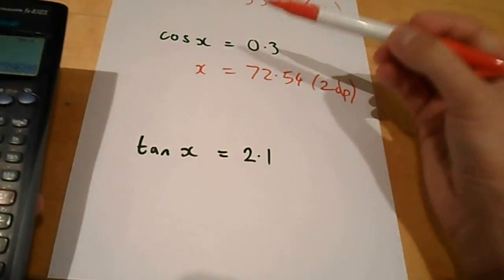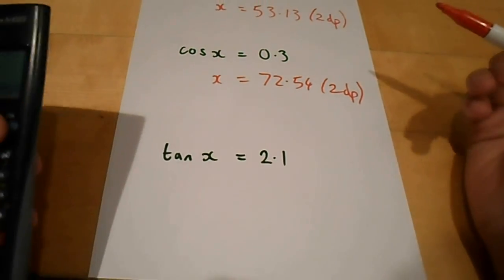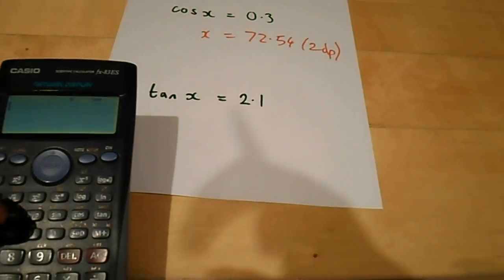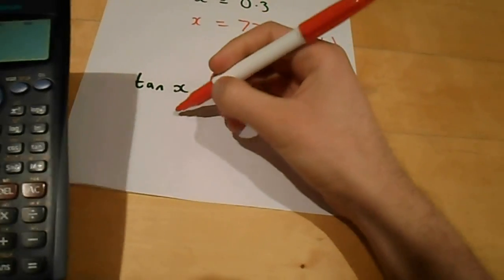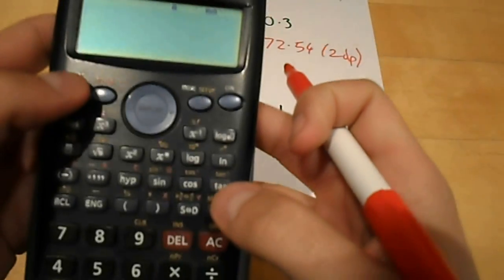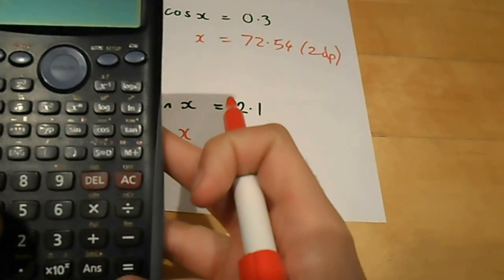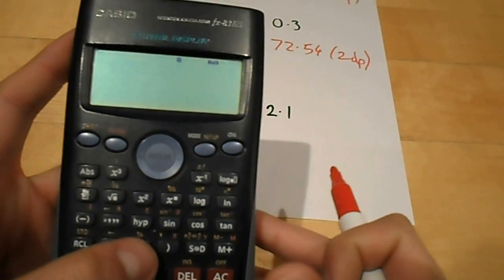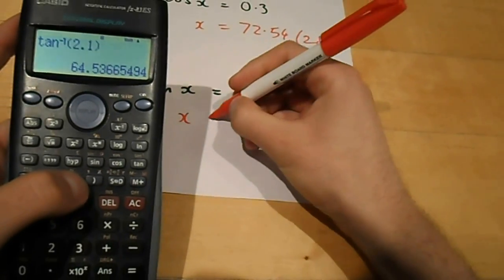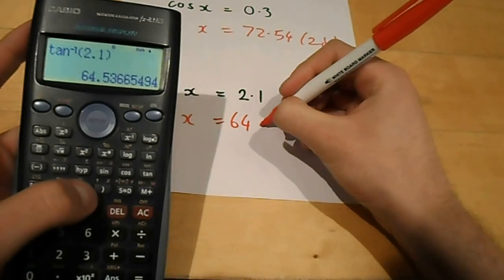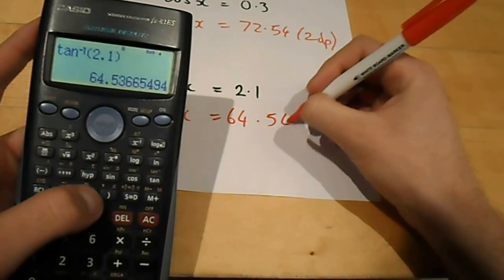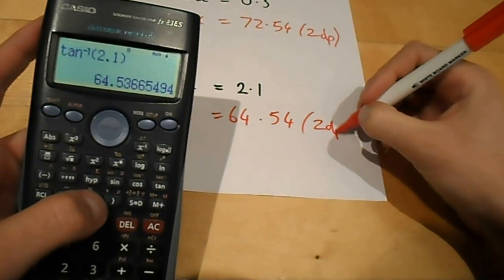So, in this situation, my angle x would be 72.54. And you can also do inverse function of tangent. Again, shift tan of 2.1. And that equals 64.54 to two decimal places.